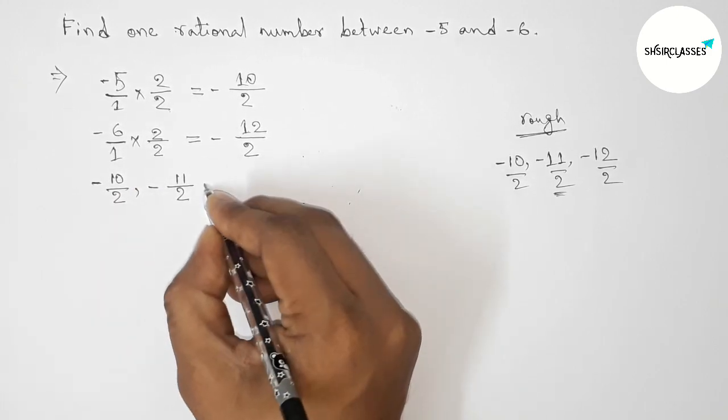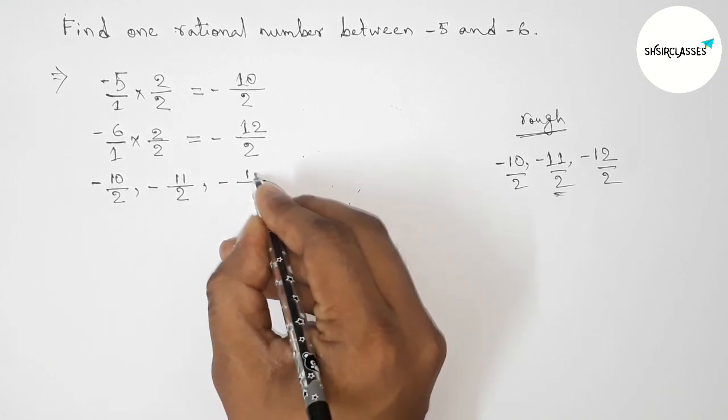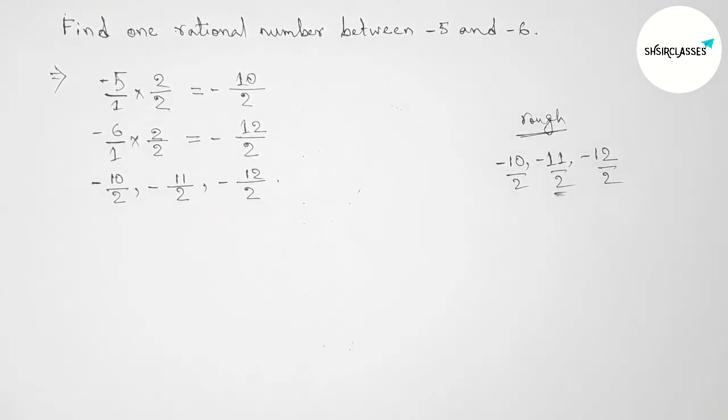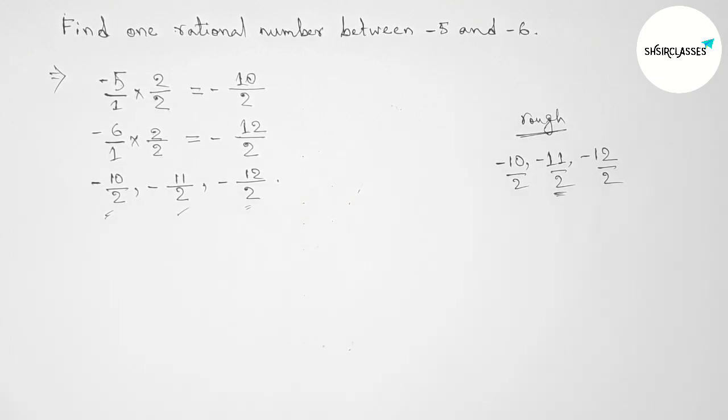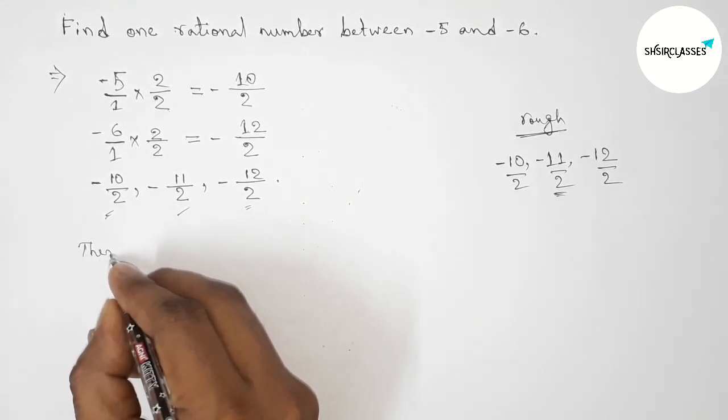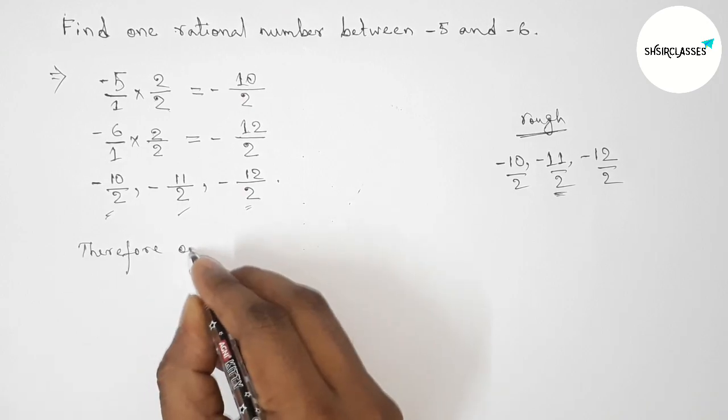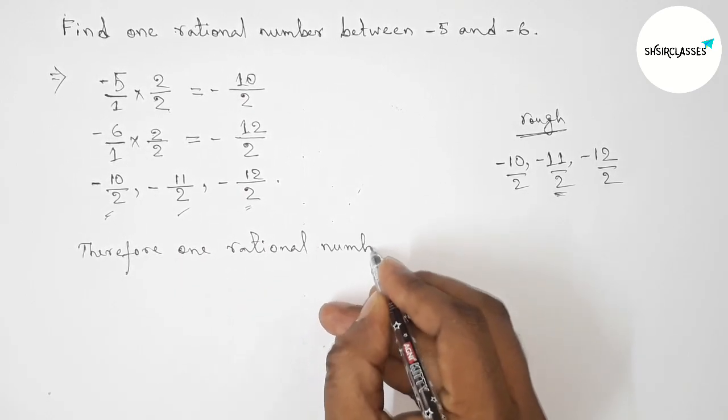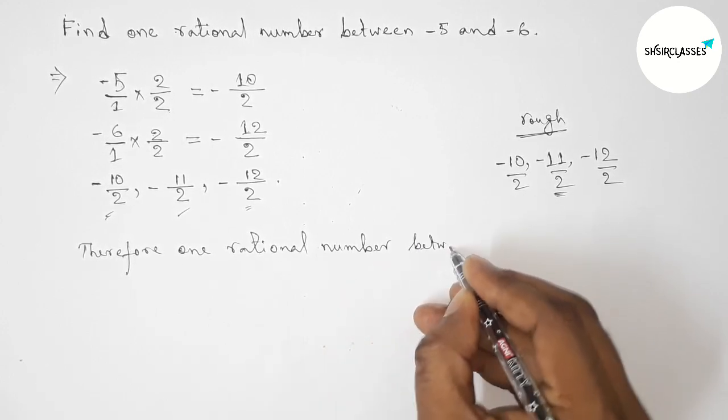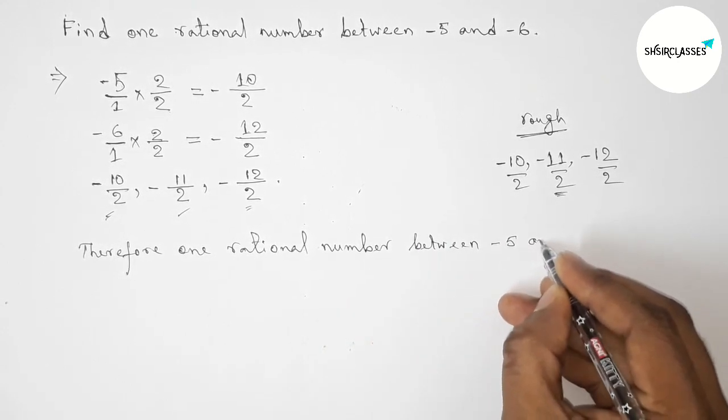So minus 10 by 2, minus 11 by 2, and minus 12 by 2. Okay, so here between this and this, this is our required one rational number. Okay, so therefore the required one rational number between minus 5 and minus 6 is minus 11 by 2.